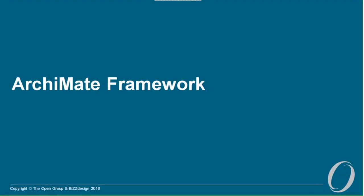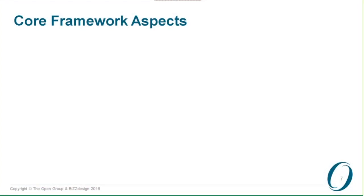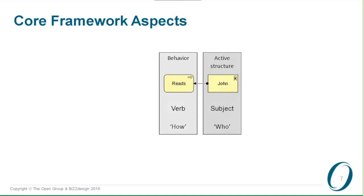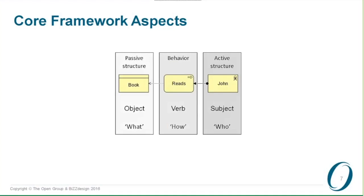So first of all, the ArchiMate framework. Those familiar with ArchiMate know that its core is constructed of three different aspects. We have the active structure aspect, which comprises the subjects of the sentence — grammatically speaking, in this case 'John.' We have the behavior aspect, the verbs in the sentence, so 'John reads.' And what does he read? He reads a book, and the book is a passive structure object. This active structure, behavior, and passive structure is really the core of the language structure, and has been so since the inception of ArchiMate.